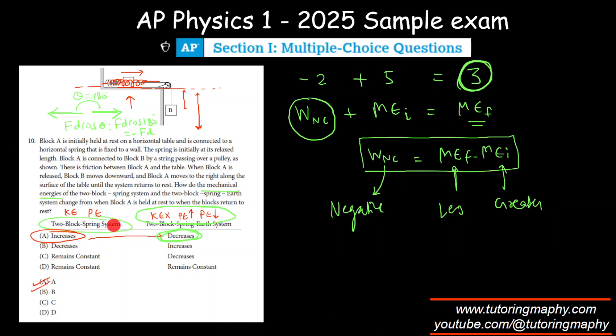Just to make it clear, when we talk about a system and they do not include earth in the system, we do not include gravitational potential energy. And when they include earth in the system, we include the gravitational potential energy. So that's how overall we solve this question.